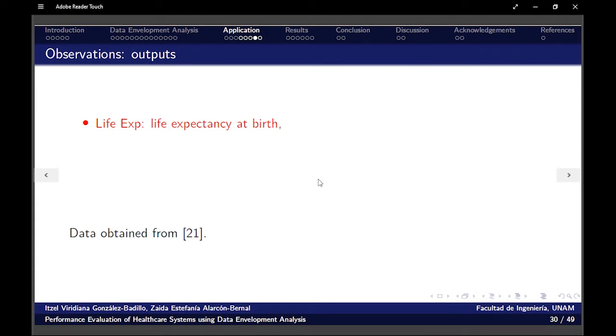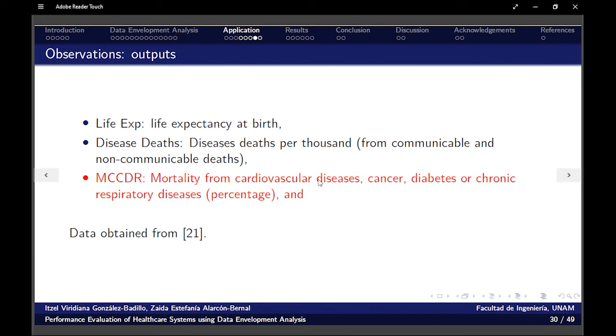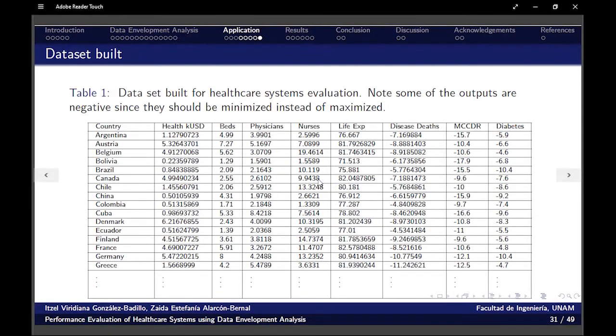And as outputs, we use the life expectancy at birth, the disease deaths per thousand—note that those are from communicable and non-communicable deaths. MCCDR is for mortality from cardiovascular diseases, cancer, diabetes, or chronic respiratory diseases as a percentage, and the percentage of diabetes prevalence. All of this information was obtained from the World Data Bank.